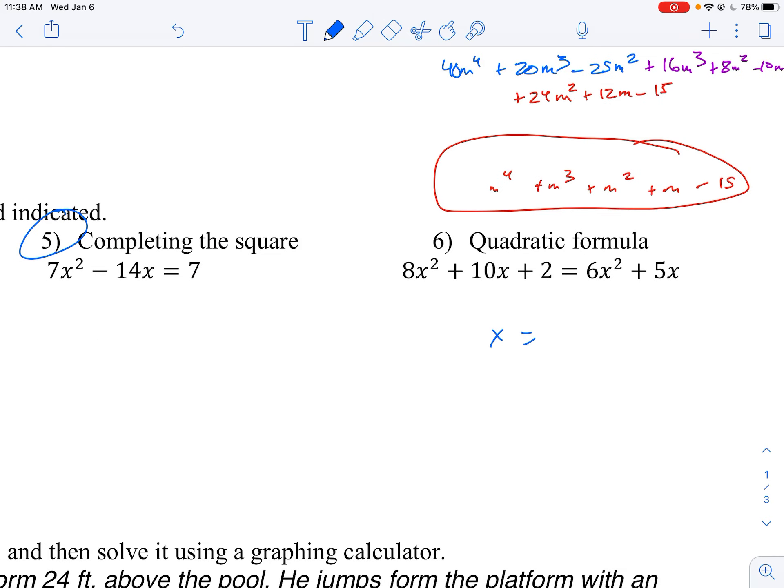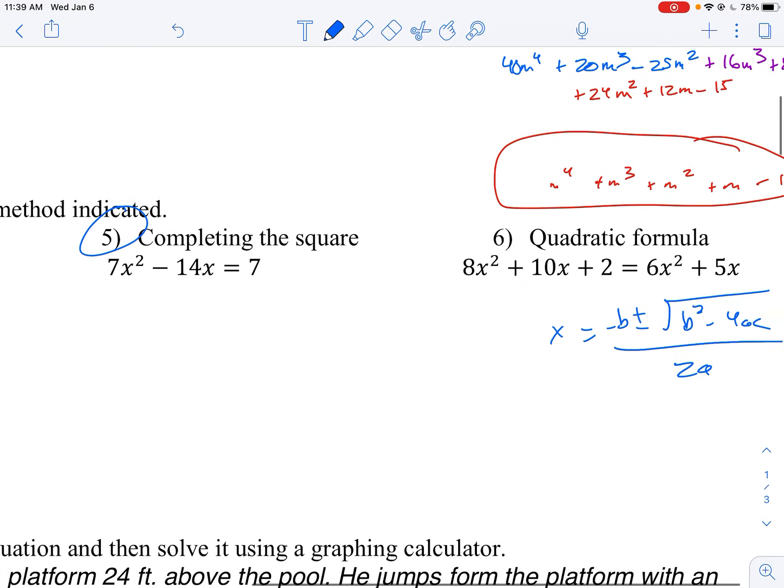And then you got quadratic formula over here. That's your x equals negative b plus or minus the square root of b² minus 4ac all over 2a. You plug the numbers in. You do need to make sure it equals zero before you plug the numbers in. Make sure it equals zero. But there's that.